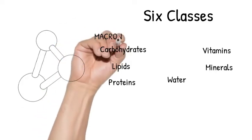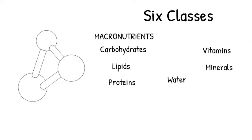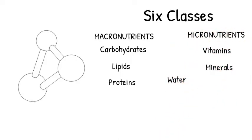Carbohydrates, lipids, and protein are known as the macronutrients because we need them in larger quantities. Vitamins and minerals are known as micronutrients because we need them only in small amounts.